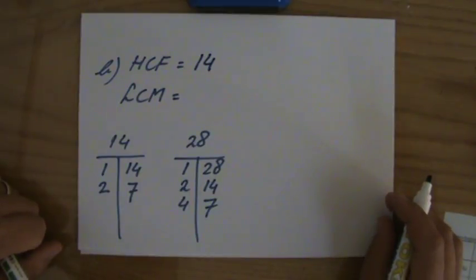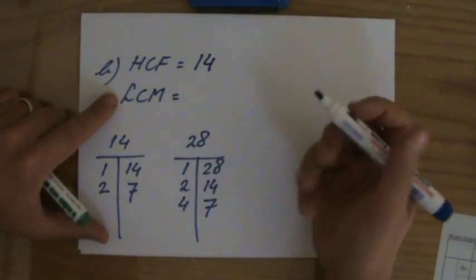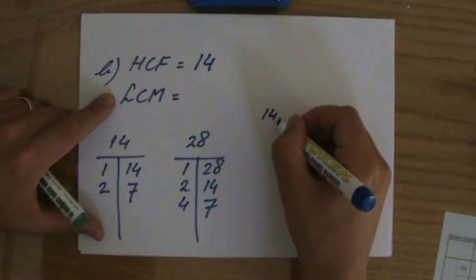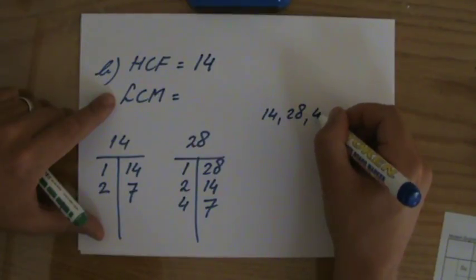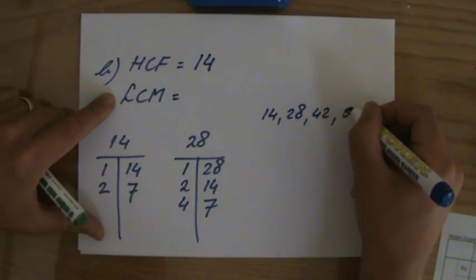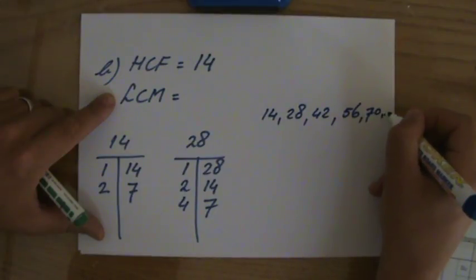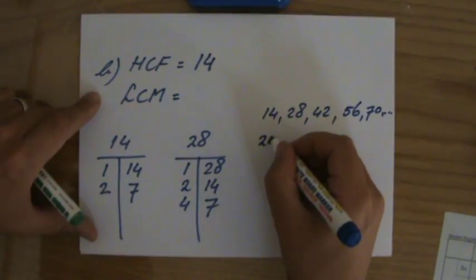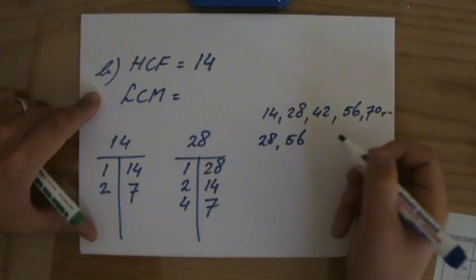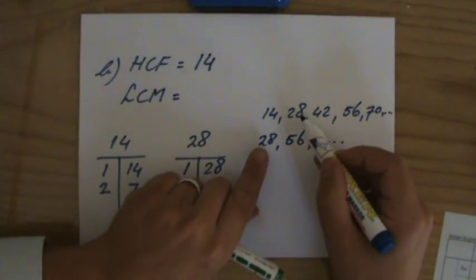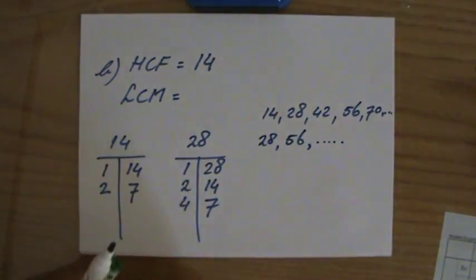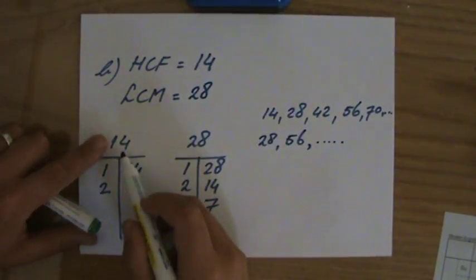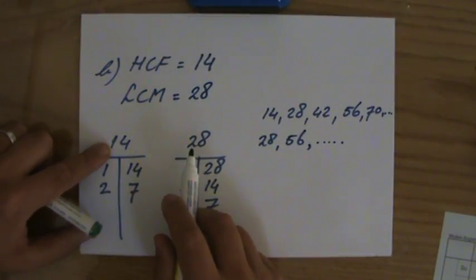Let's move on to the lowest common multiple. We're talking about multiples and timetables, so let's write a few down. Multiples of 14: 14, 28, 42, 56, 70, 84... Now for 28: 28, 56 — but hang on, I already see one they have in common: 28. So the lowest common multiple of 14 and 28 is 28, since 2 times 14 is 28 and 1 times 28 is 28.